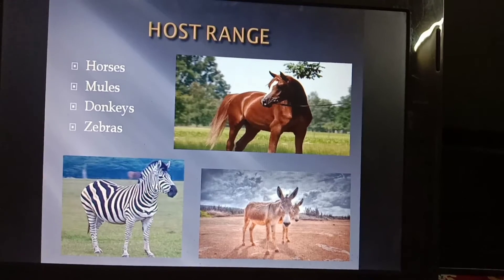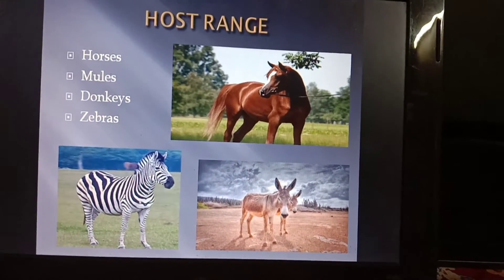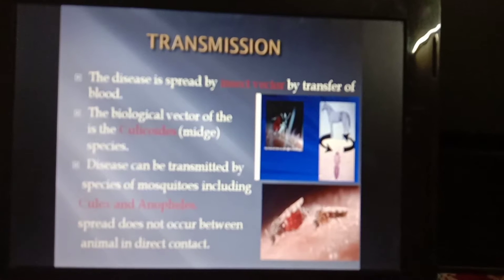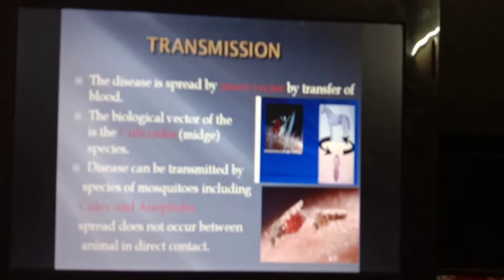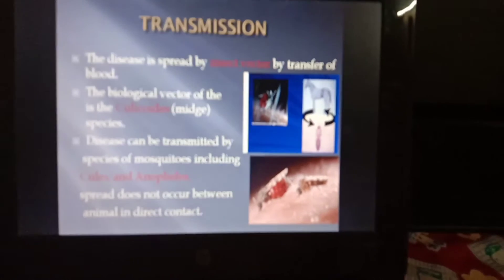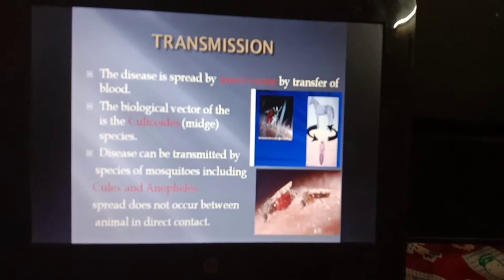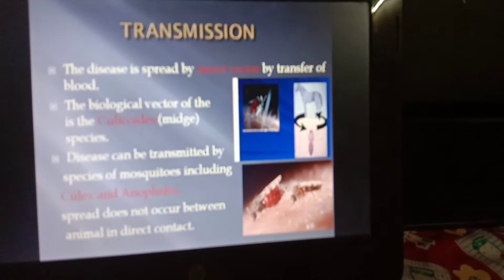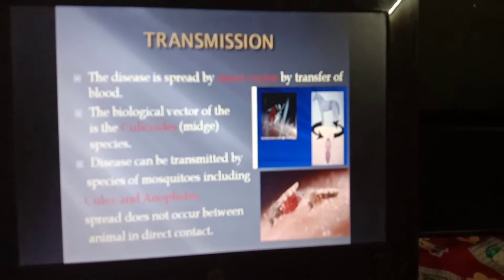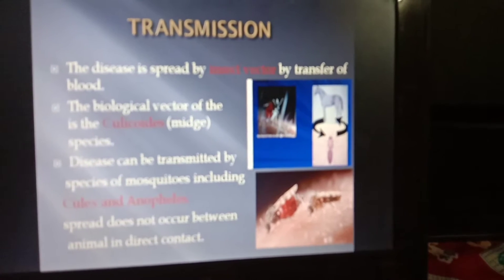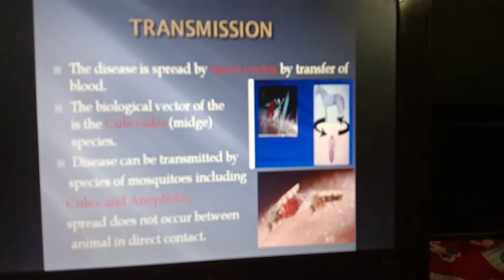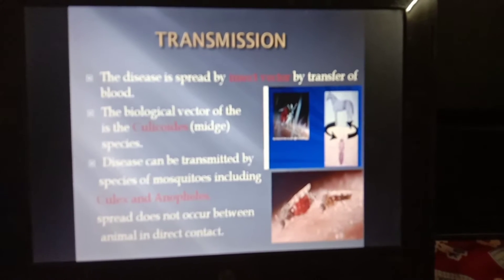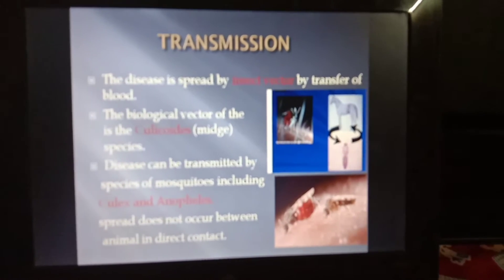Host range includes horses, mules, donkeys, and zebras. Regarding transmission, the disease is spread by insect vectors through transfer of blood. The biological vector is also responsible for transmitting the disease. The main vector is the midge — the Culicoides species. The disease can also be transmitted by some mosquitoes including Culex and Anopheles. The spread does not occur between animals in direct contact.